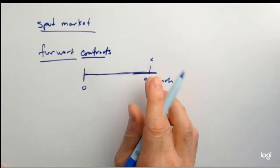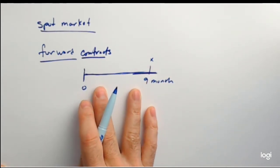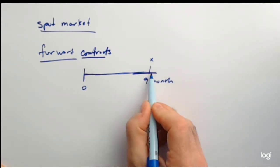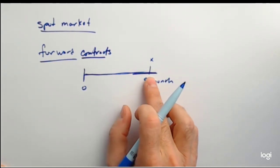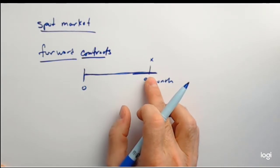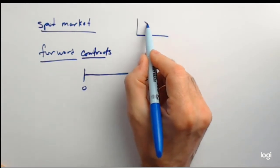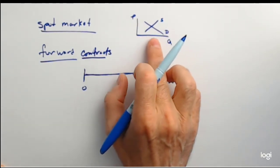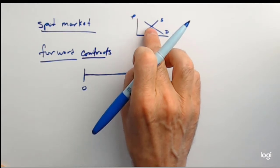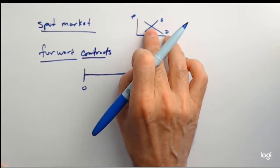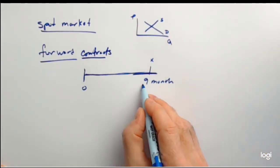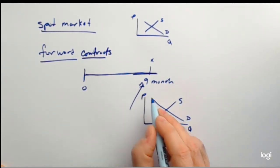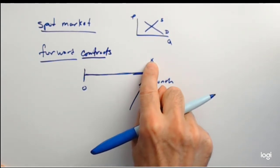You enter into this contract and negotiate the size — for example, how many pounds of sugar you want to buy — and the expiration date. Then you figure out what the price of sugar is going to be in the future. In the spot market you're used to supply and demand with a price and a quantity. But here, people have to think about what supply and demand look like nine months from now, because that's going to help determine the forward price.